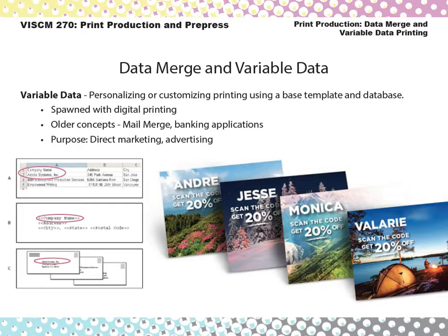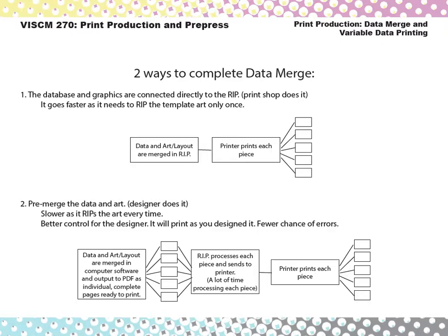We're going to do some data merge variable data printing in class, and you can find instructions online. There are two major ways to do it. The first option is to have the printer do it — you give the data, the art, and the layouts to the printer, and the printer merges them on the fly, essentially merging it in the RIP and printing out each individual piece.